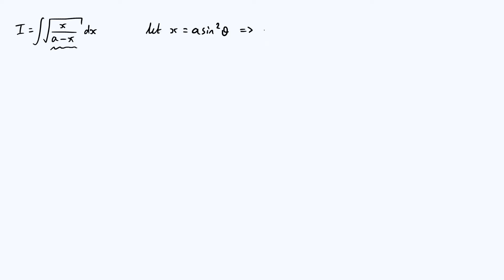So if we take that expression a minus x and make the substitution, you can factor out an a and write it as a brackets 1 minus sine squared theta. But then you can use a trig identity to say that that's just a times cos squared of theta.